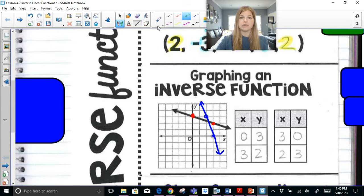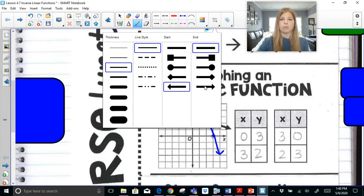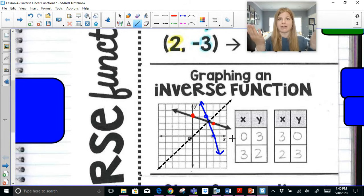Now something really special about an inverse function is that it is symmetric about the line y equals x. So I'm going to show you, if I draw this line of y equals x, it's actually a line of symmetry. That graph is reflected directly over it.